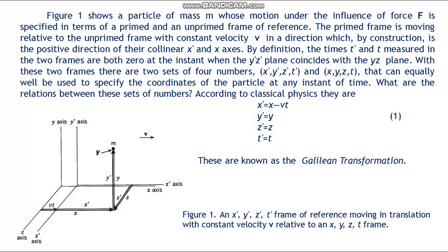What are the relations between the sets of numbers? According to classical physics they are: x-asterisk equals x minus v multiplied by t; y-asterisk equals y; z-asterisk equals z; t-asterisk equals t. Formula number 1. This is known as the Galilean transformation.